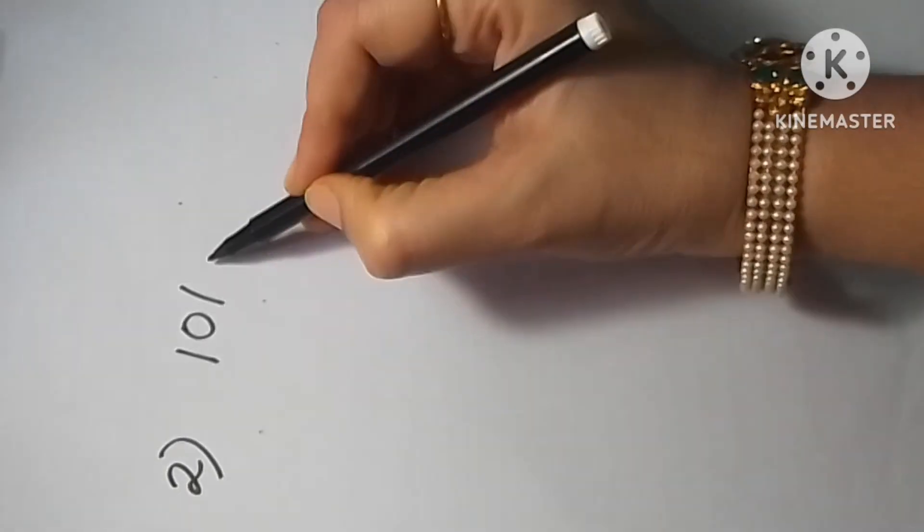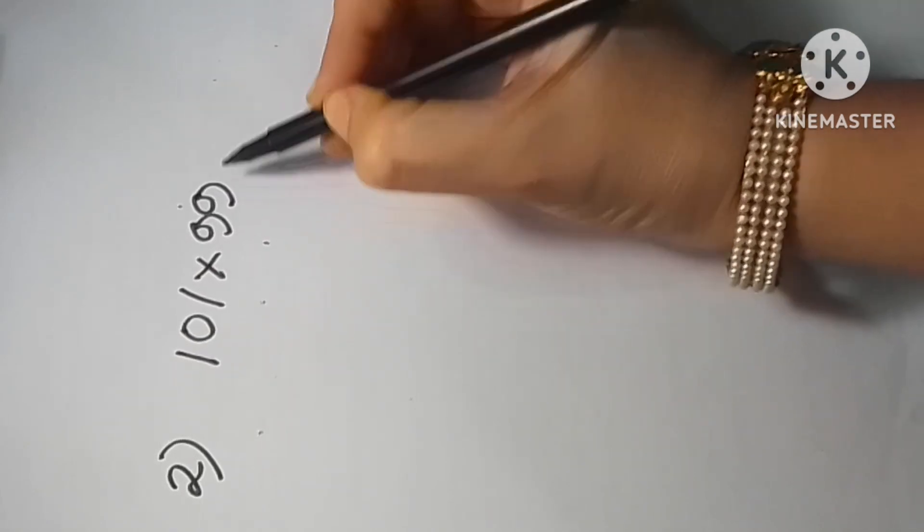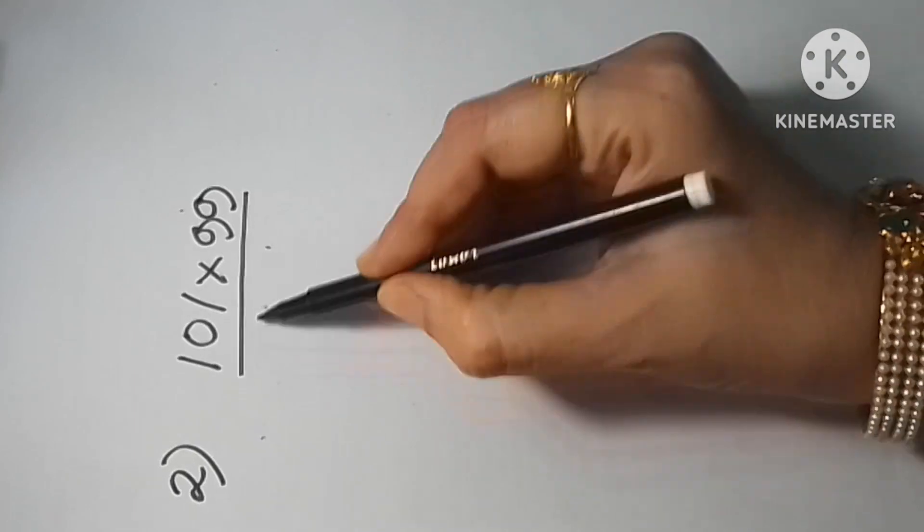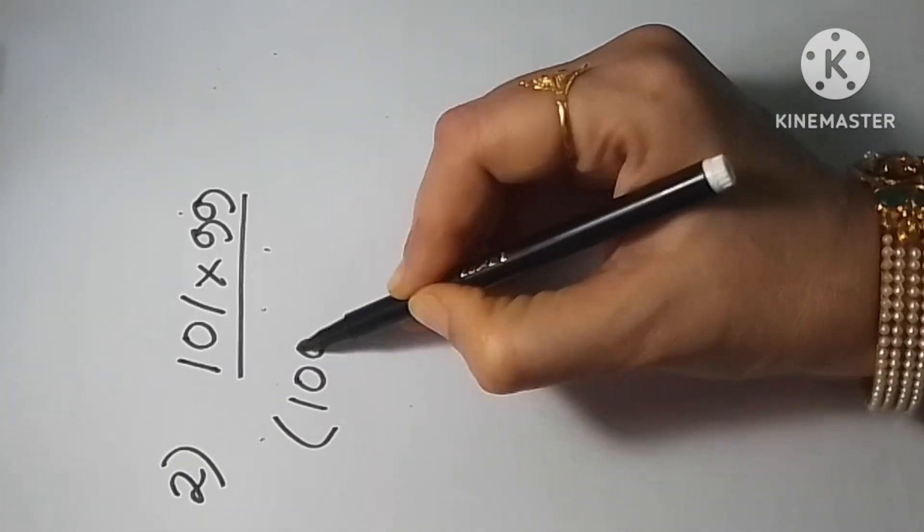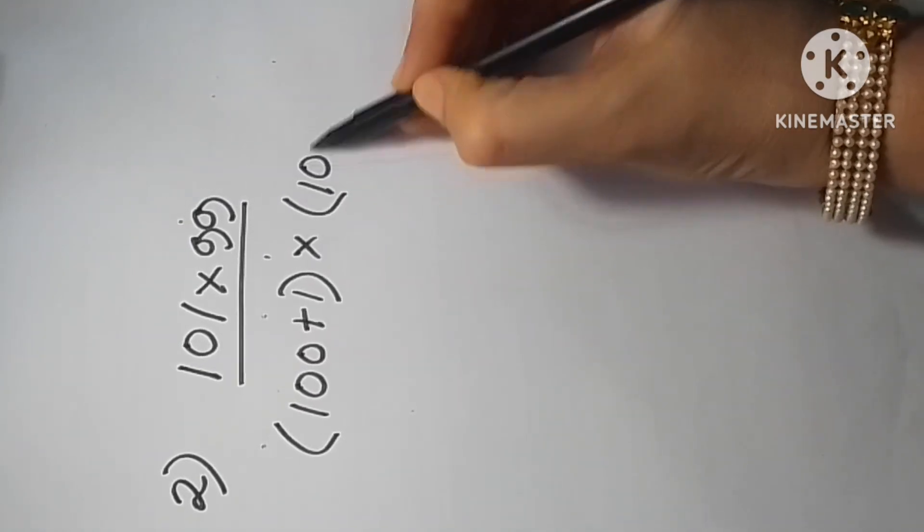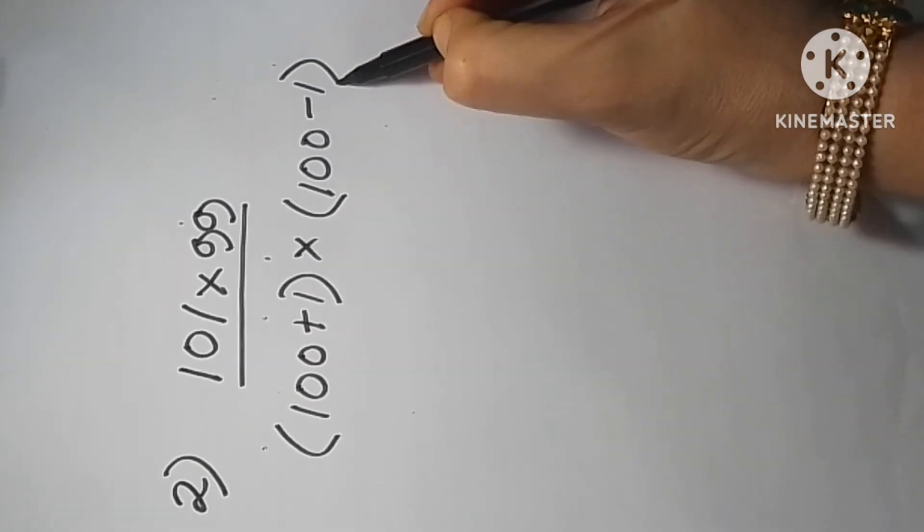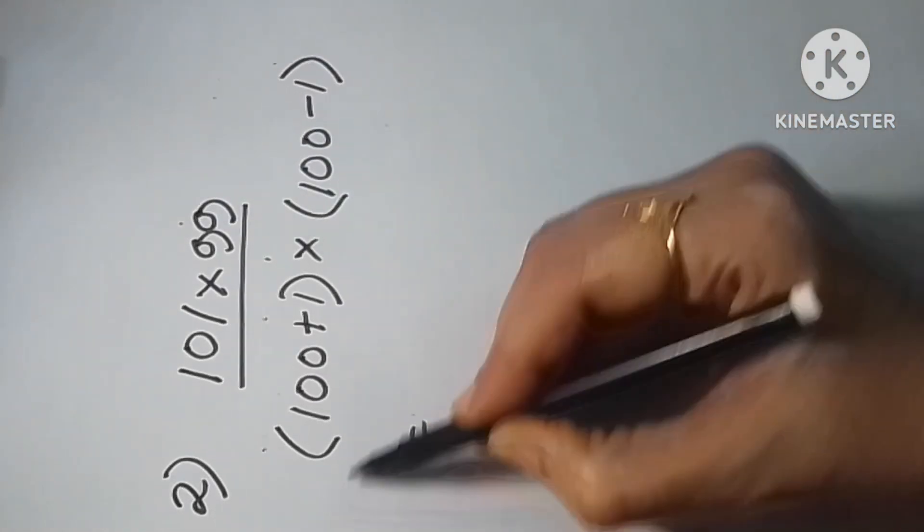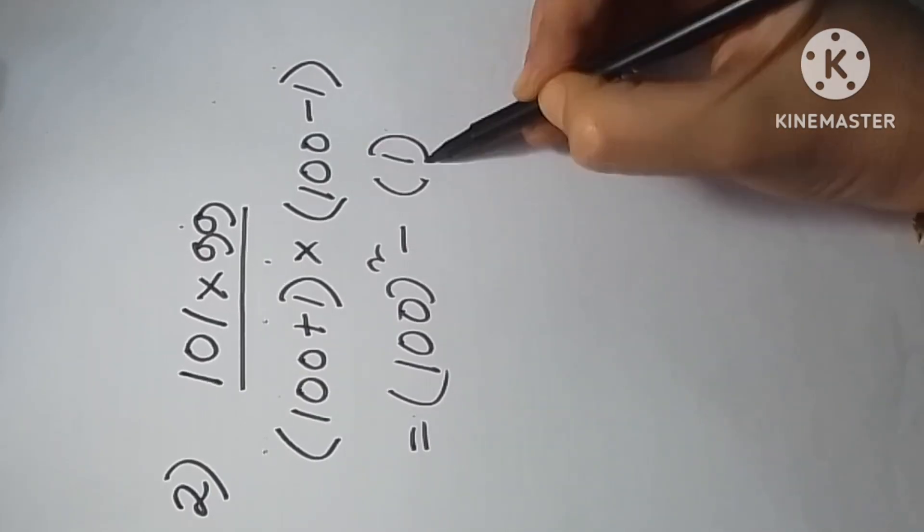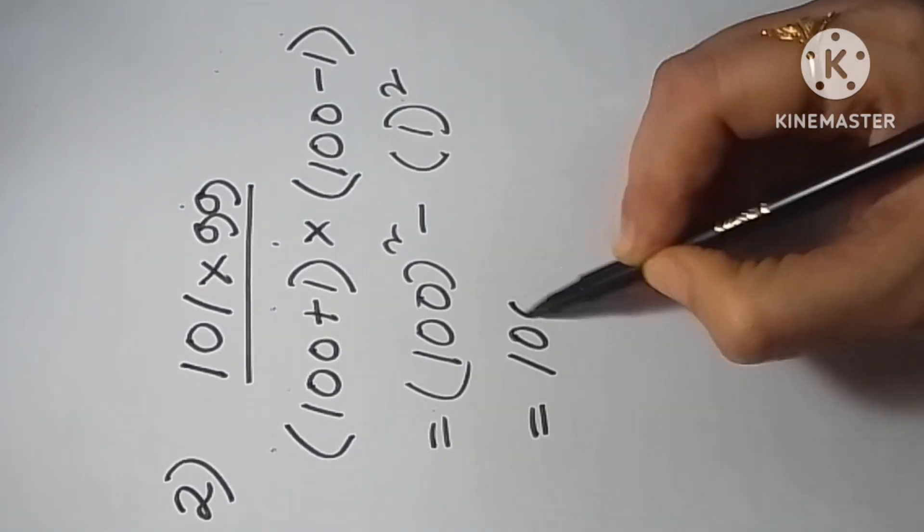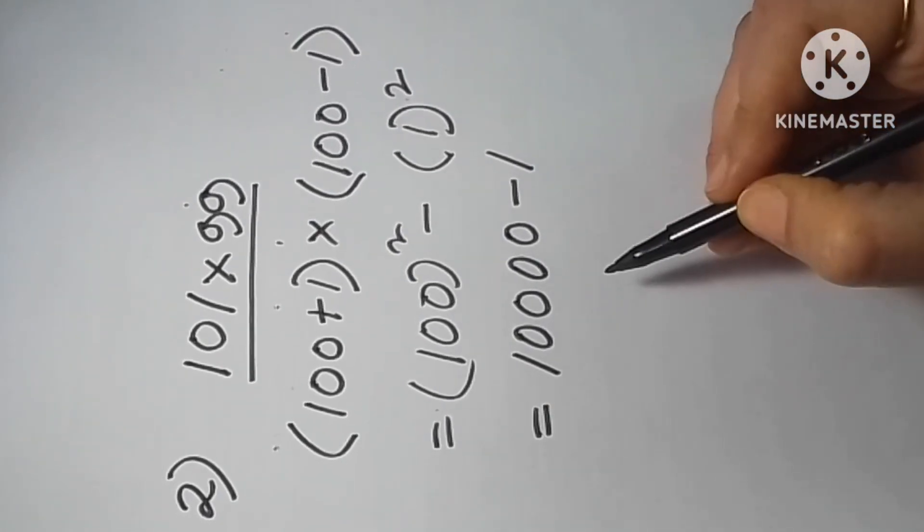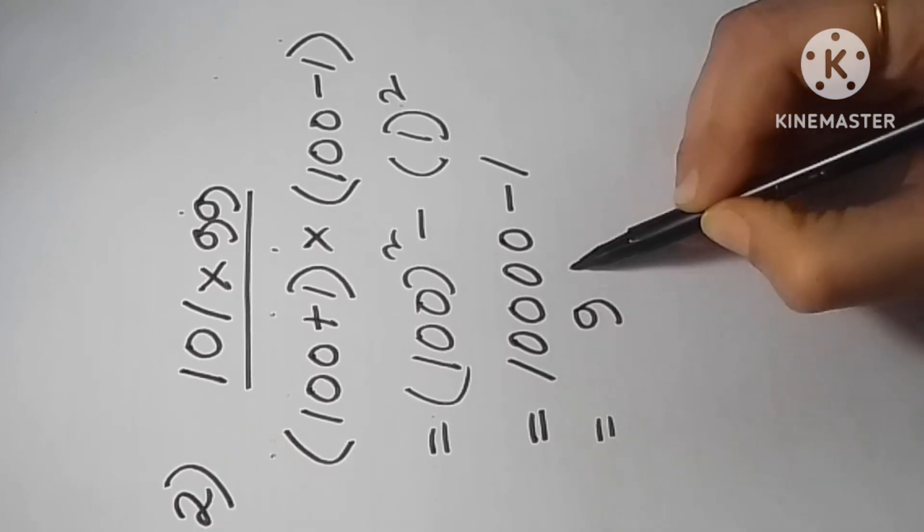For my next example, 101×99, we have to write it down as identity. Here the middle term will be 100. We can break down and write the term as (100+1)(100-1), which is (a+b)(a-b). So a²-b² will be 100²-1². Using the identity formula, we can easily find out the value of this term.